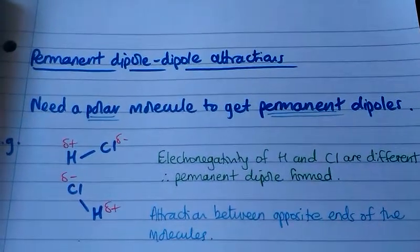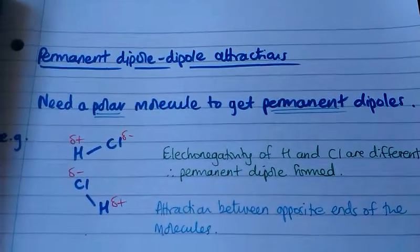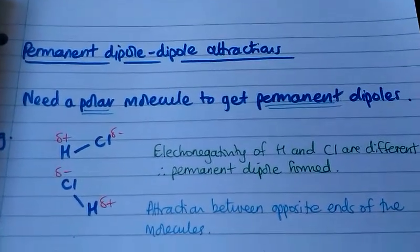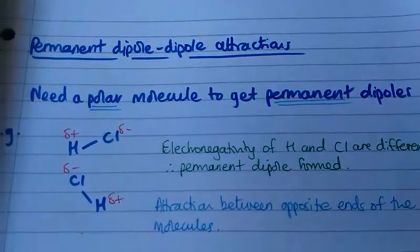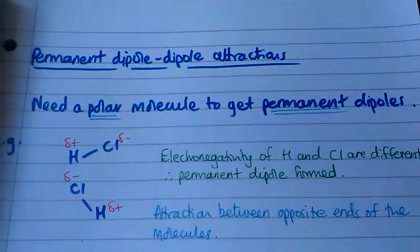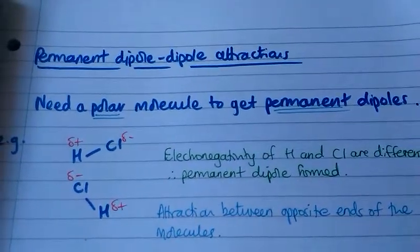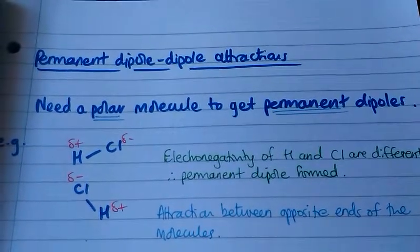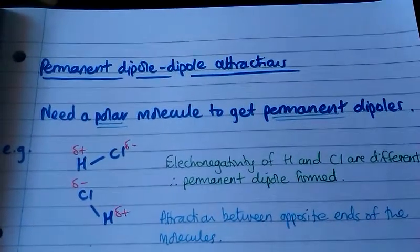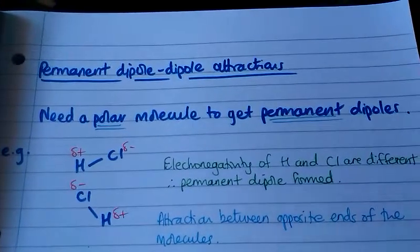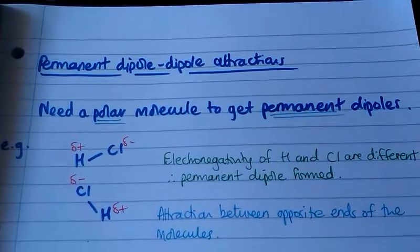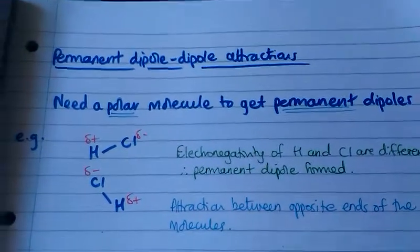When that comes near another HCl molecule, there's attraction between the opposite ends of the molecule. So delta plus is attracted to delta minus, and delta minus is attracted to delta plus.